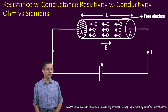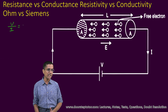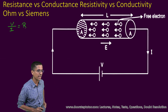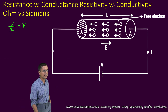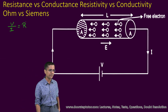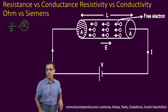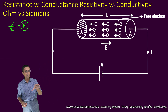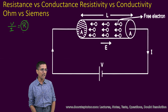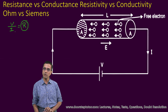We know that Ohm's law says that the ratio of V and I is constant for metallic conductors, and that is equal to V by I = R. This R is known as resistance. Resistance R is given by this formula.